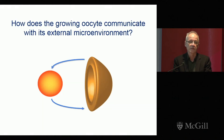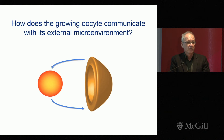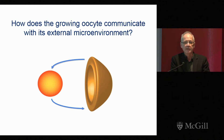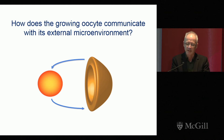In my lab we focus on three questions. The first is, how does the growing oocyte communicate with its external microenvironment? The oocyte lives inside a structure called a follicle, and we know that development of the oocyte depends on ongoing and continuous communication with the cells of the follicle that provide the appropriate signals and developmental cues. Our interest is in understanding how the bridges that enable this intercellular communication are constructed and maintained.